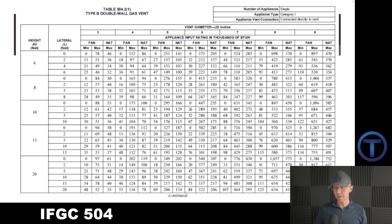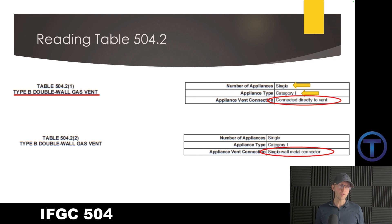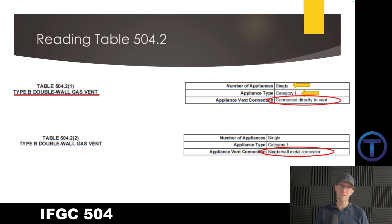Let's talk through what information you need to know. Look at the top of these tables — this is the same as with gas pipe sizing. First of all, you've got to know the type of vent that you're dealing with. Most of the first tables here are the type B double wall gas vent. It says it right at the top. So right off the bat, I know I'm going to use a draft vent, type B, going out of the building. But then there's other information I need to know.